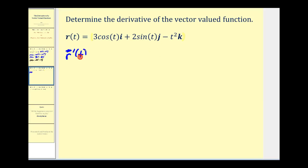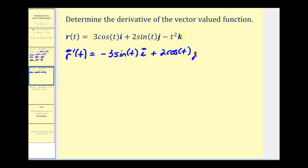The derivative of this vector-valued function will be the derivative of cosine t times the unit vector i. The derivative of cosine t is negative sine t, so we'll have minus 3 sine t times i, plus the derivative of 2 sine t, which is 2 cosine t times the unit vector j, minus 2t times the unit vector k.